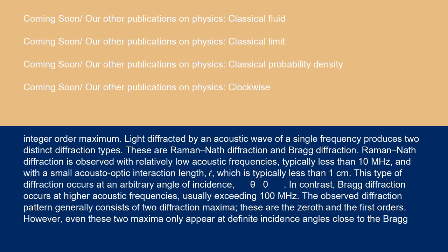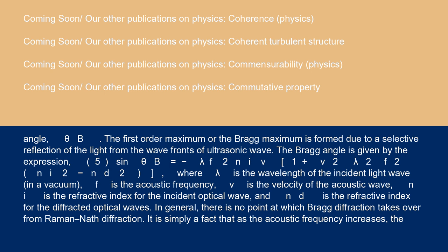In contrast, Bragg diffraction occurs at higher acoustic frequencies, usually exceeding 100 MHz. The observed diffraction pattern generally consists of two diffraction maxima: the zeroth and the first orders. However, even these two maxima only appear at definite incidence angles close to the Bragg angle, θB.